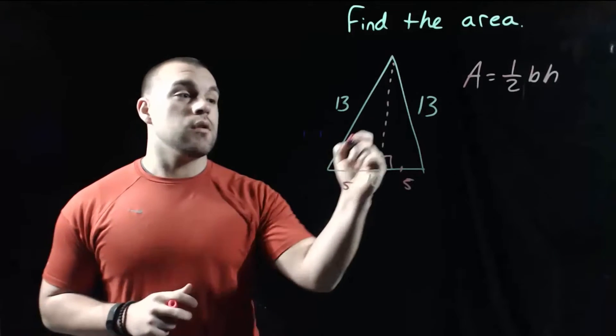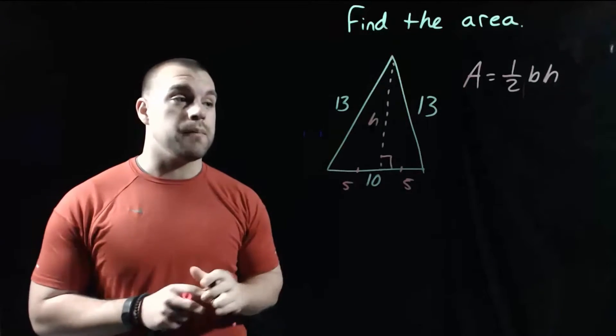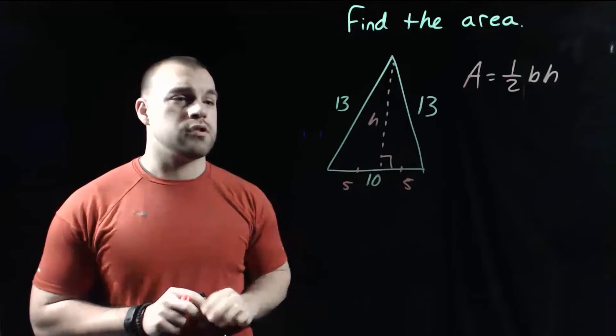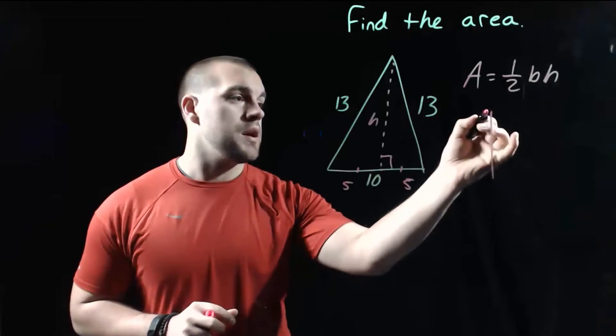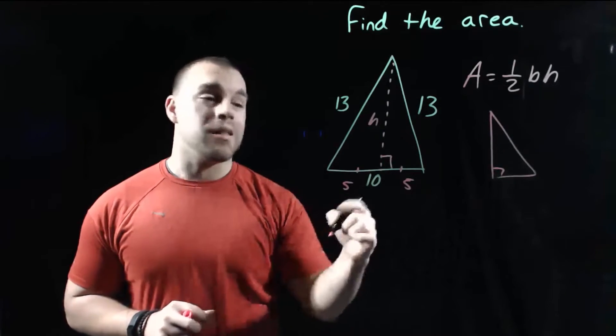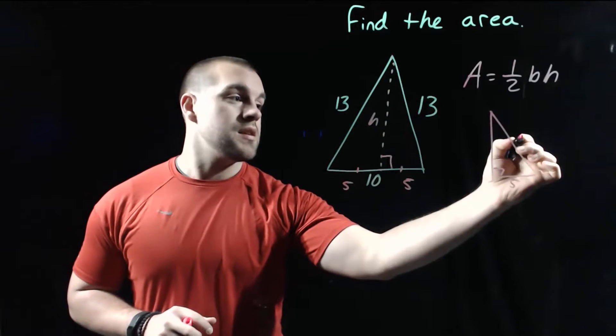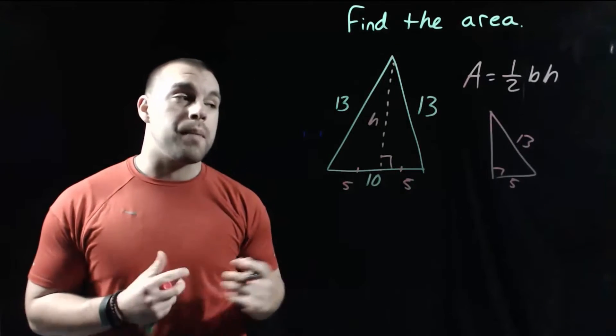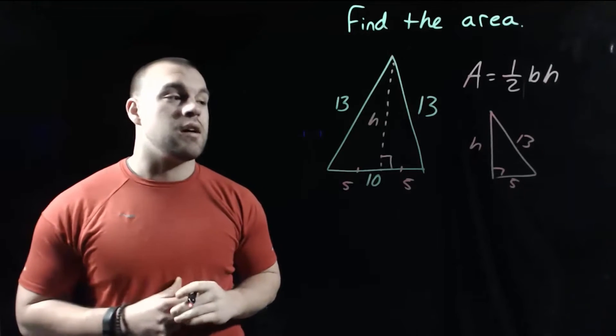What we need to do is find the height of this triangle so that we can figure out the area. So I'm going to draw just a portion of this triangle. I don't want to look at the whole thing anymore. I just want to look at the piece that looks like a right triangle. On the bottom that length is 5. This diagonal piece is 13 which ends up being our hypotenuse and we're going to try to find this height, this h value.